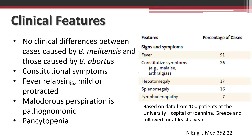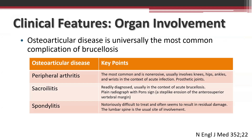As far as clinical features, there is no clear clinical difference between species — primarily melitensis and abortus. Most symptoms are constitutional. Fever is common at 91% based on a study of 100 patients, and can be relapsing, mild, or persistent. Malodorous perspiration is pathognomonic. Physical exam may show hepatomegaly, splenomegaly, and lymphadenopathy in up to 7% of cases. Pancytopenia is notable on labs. The most common complication is osteoarticular disease.